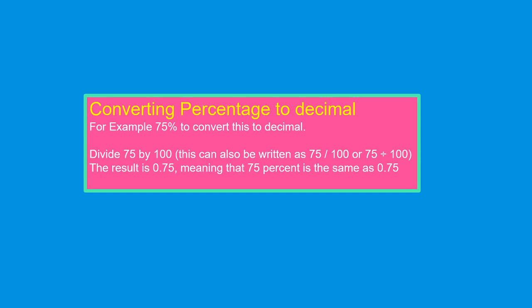This can also be written as 75/100 or 75 divided by 100. The result is 0.75, meaning that 75% is the same as 0.75.